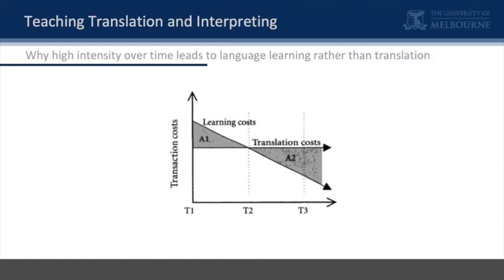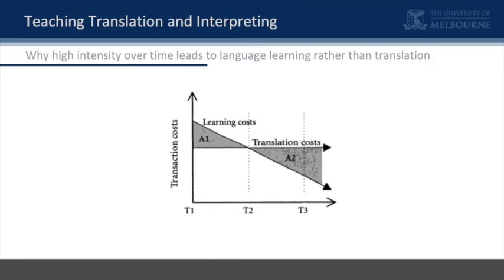When flows or exchanges between two languages become particularly intense over time — and I'm emphasizing over time here — translation tends not to be a good solution. Let me give you this abstract model; it might help you think about this. We're moving at time one, time two, time three.